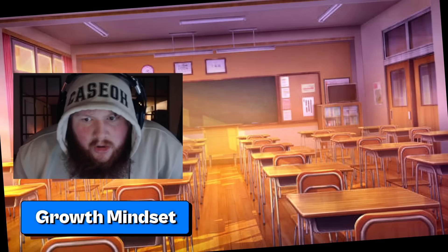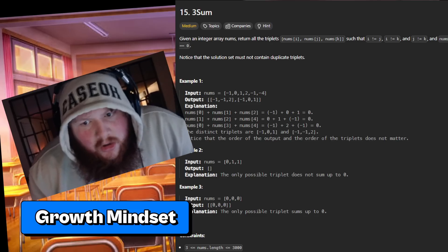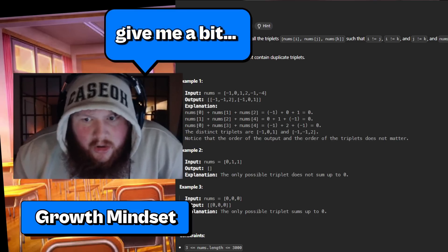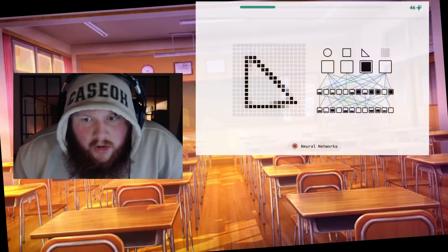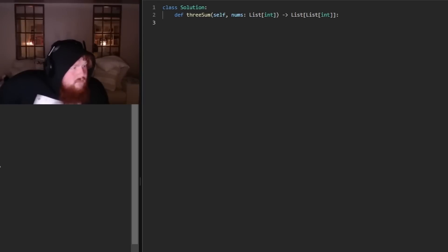On the other hand, we have the 500-ton paycheck-to-paycheck low-income Twitch streamer Queso. He has a growth mindset. When Queso faces the same difficult coding problem as Mr. Beast, he thinks, this is tough but not impossible. I can figure it out if I keep trying. He seeks out resources, he asks for help, and he keeps going until he finds a solution. Over time, Queso's skills improve significantly.